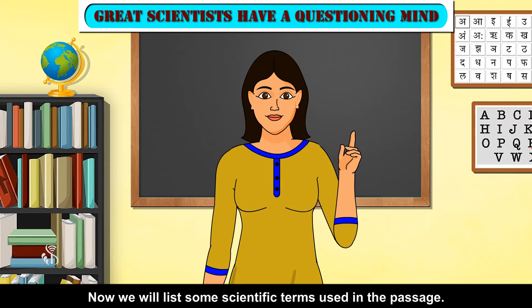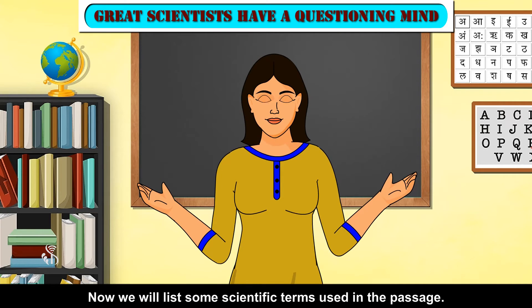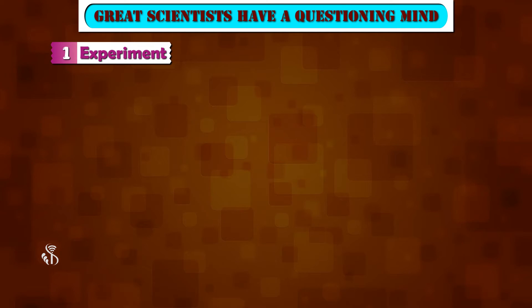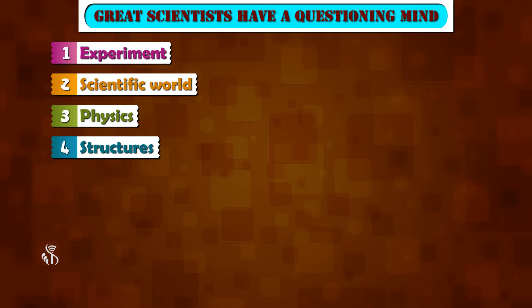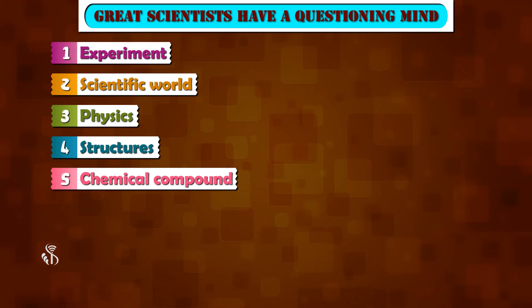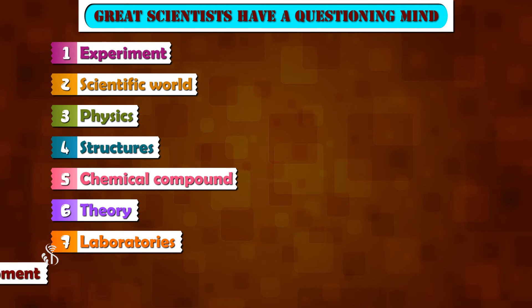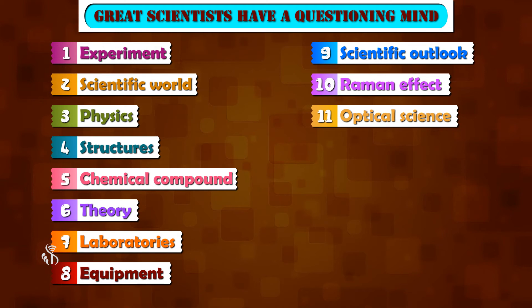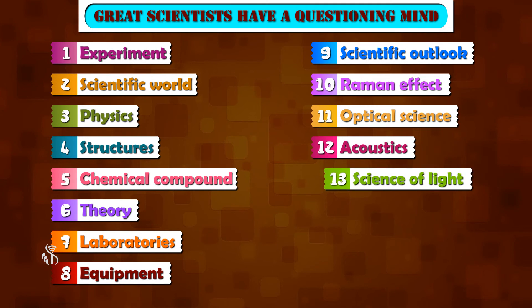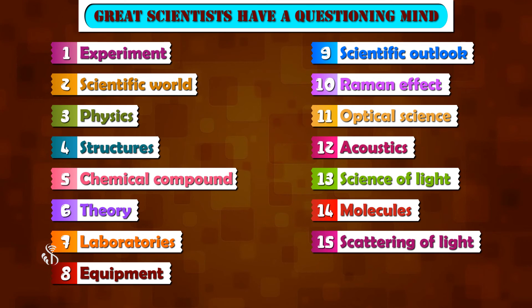Now we will list some scientific terms used in the passage: Experiment, Scientific World, Physics, Structures, Chemical Compound, Theory, Laboratories, Equipment, Scientific Outlook, Raman Effect, Optical Science, Acoustics, Science of Light, Molecules, Scattering of Light.